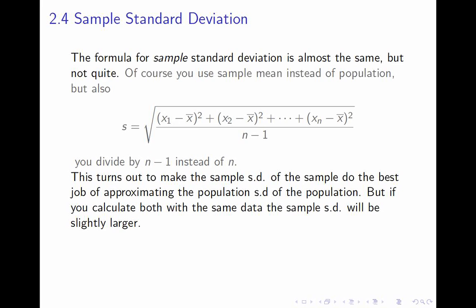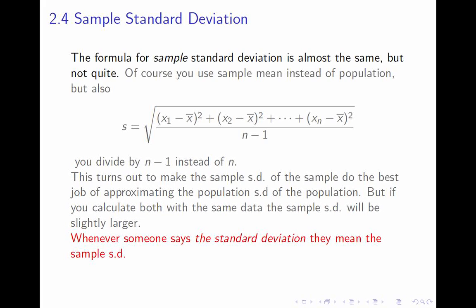There are two important things to remember about population and sample standard deviation. The first is their formulas are different. The second is you shouldn't stress about that. By and large, when someone says find the standard deviation, they mean find the sample standard deviation — because if you're finding it, you must be using actual data, which means you're probably using a sample. Also, the standard deviation is sensitive to outliers. It's not a good idea to use the standard deviation when you have extreme data points, because they have a big effect on the standard deviation, even more so than the mean.